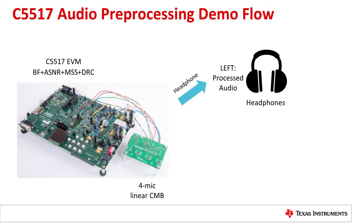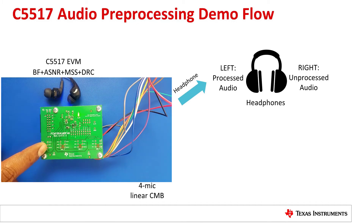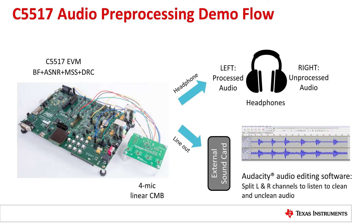The left headphone ear will have the processed audio, and the right headphone ear will have the unprocessed audio. This provides a mechanism for the user to evaluate the quality of the audio processing in the demo. You can rub your finger over each microphone to hear which mic can be heard over which earphone. Please be careful as you rub your fingers on the microphones, as the volume levels can be very high.